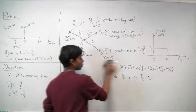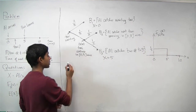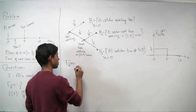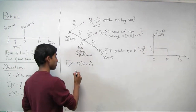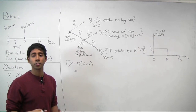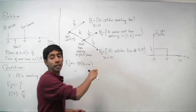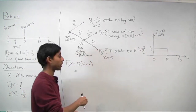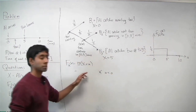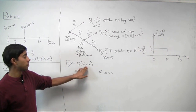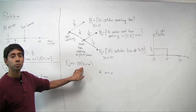Now we want to compute the CDF of X. The CDF F(x) equals the probability that the random variable X is less than or equal to some constant little x. Before jumping in, let's consider boundary cases. We know the waiting time X is between zero and five. If little x is less than zero, the probability that X ≤ x is zero, since waiting time can't be negative.